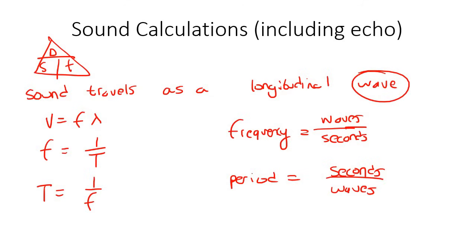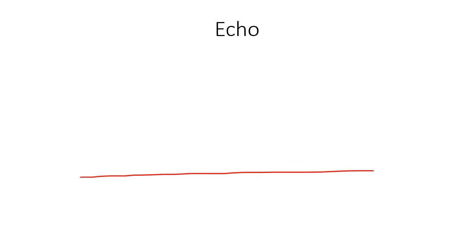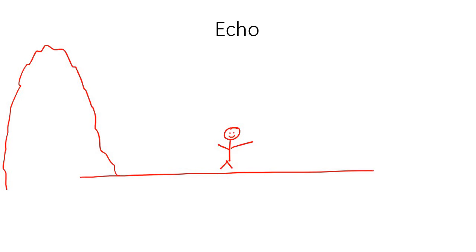Now something we need to speak about before we start looking at calculations is the echo, because that comes up a lot in these sound calculations. So let's say you've got this open field, and here's you standing on the open field, and here is a big mountain. I'm sure you've done it before where you're hiking in the mountains and you shout as loud as you can.